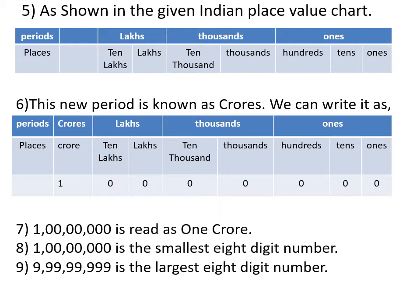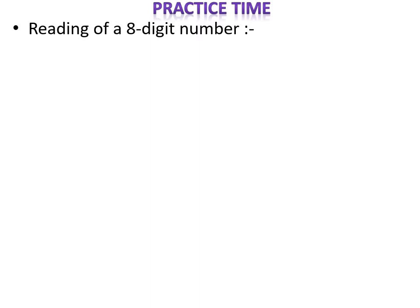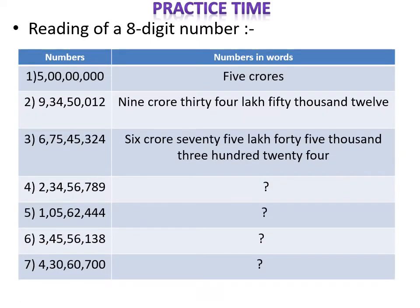The largest eight digit number is nine crore ninety-nine lakh ninety-nine thousand nine hundred and ninety-nine. Now it's practice time — how will you read an eight digit number? See here: five is in the place of crore and the remaining digits are zero, so we read it as five crores.